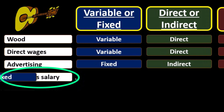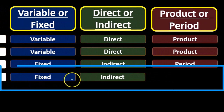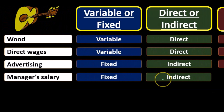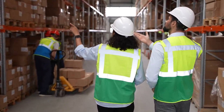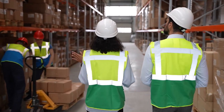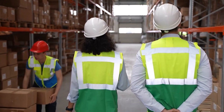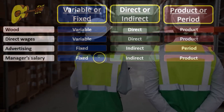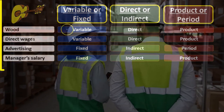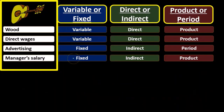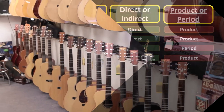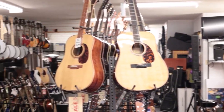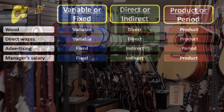For manager's salary — if they're managing the warehouse — we're going to say it's fixed because they receive a salary, not wages tied to guitar production. It's going to be indirect, because even though they're in the warehouse, we don't know which guitar they're actually managing or supervising. We're going to have to apply their costs out to the guitars in some format. And we're going to say it's a product cost because they're managing the warehouse. So: fixed, indirect, and product cost — because we still have to allocate that salary out somehow.